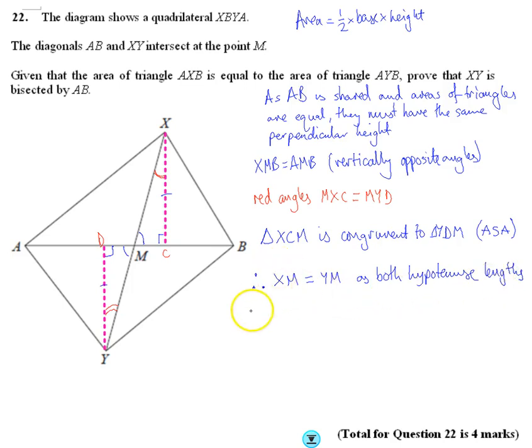And if that's true, we can then say that, so given the hypotenuse is proved that XY is bisected by AB.